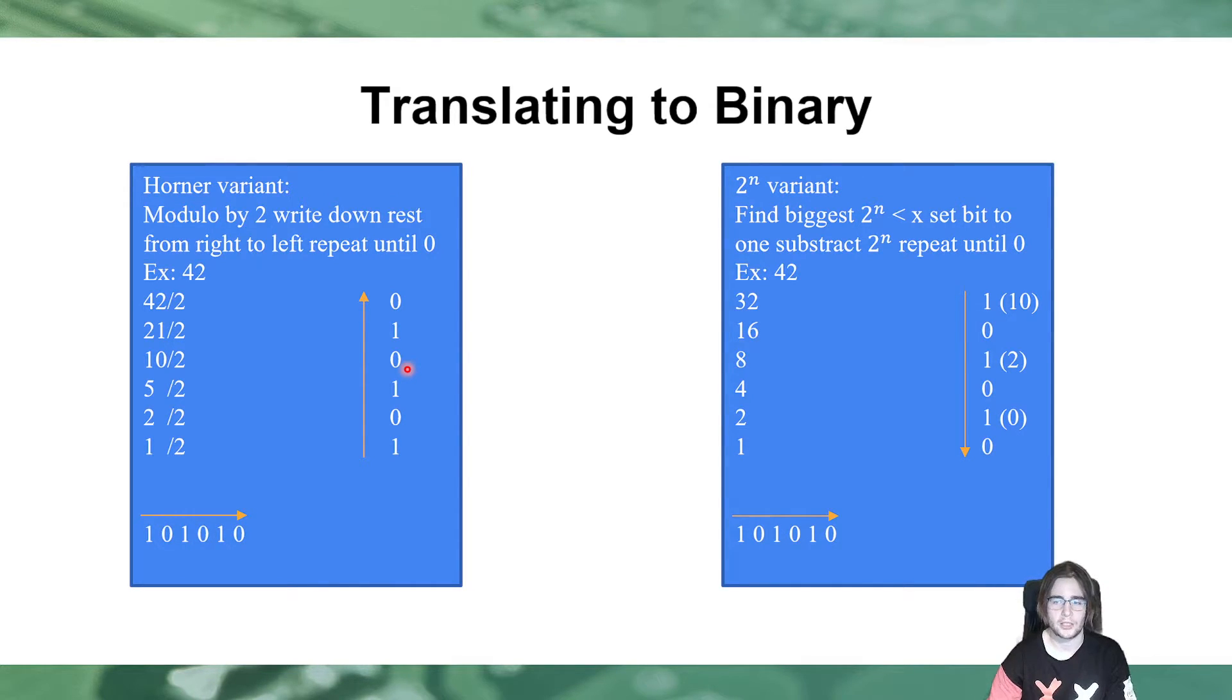And now, we get to the next variant, which I think for me, for doing it as a human in your head is a bit easier. First of all, my tip, if you ever need to translate to binary and from binary, just write down all 2 to the power of n numbers, so 1, 2, 4, 8, 16, 64, 128, 256, 512, 1024, and so on.